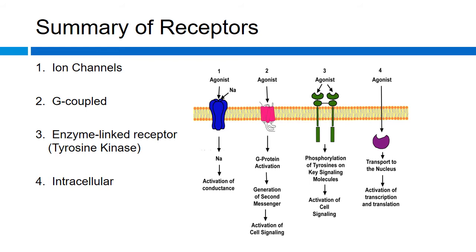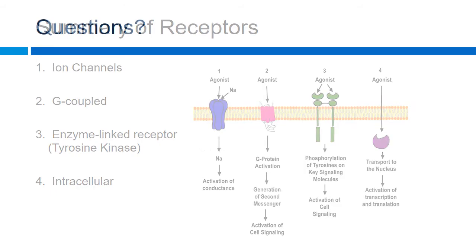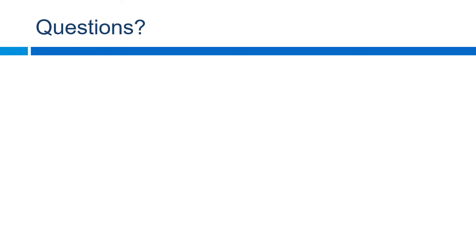Any questions on how any of these receptor types work? Regarding G protein receptors: the first messenger is the thing that binds to the actual receptor portion. The G protein, when it activates those different subunits, will affect adenyl cyclase as the actual secondary messenger, or IP3, or different things like that. We'll look at those in more detail in the next upcoming slides.